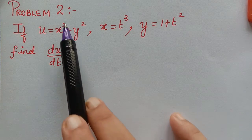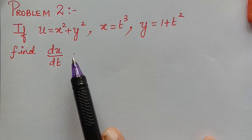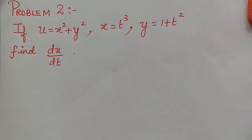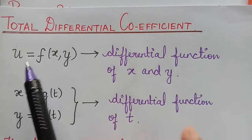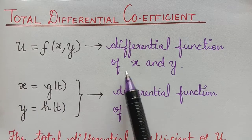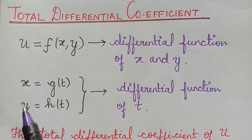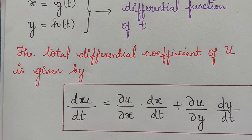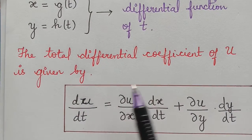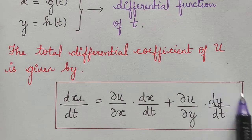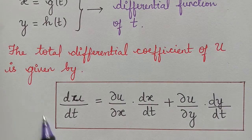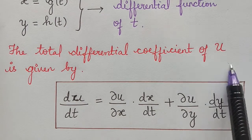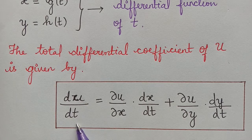We have to solve this by using the concept of total differential coefficient, where we have learned that if u is given as a differential function of two variables x and y, where x and y are differential functions of t, then the total differential coefficient of u is given by this formula. We need to use this formula to find du by dt.